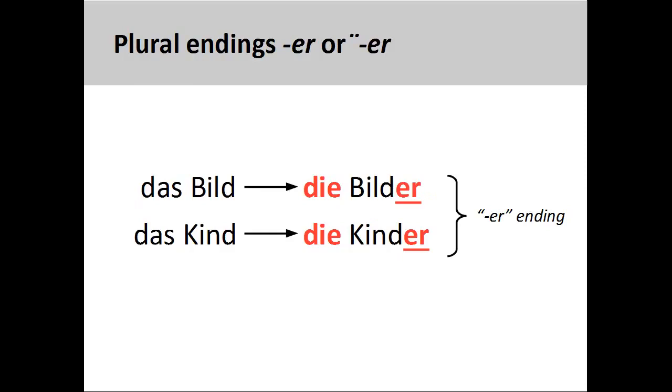The third group consists of nouns that add -er for a plural ending. Most of the nouns in this group are masculine and neuter nouns having one syllable. The noun Kind, child, belongs to this group, Kinder. The noun Bild, picture, also belongs to this group, Bilder.